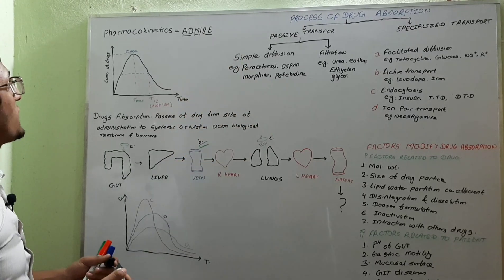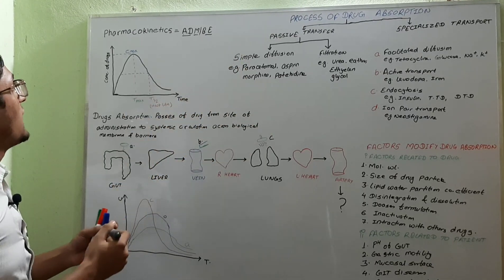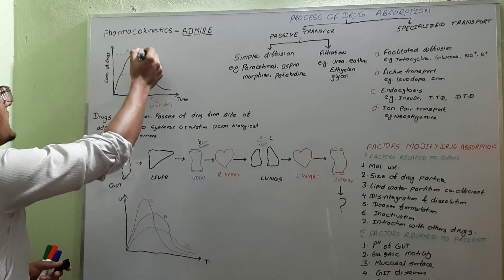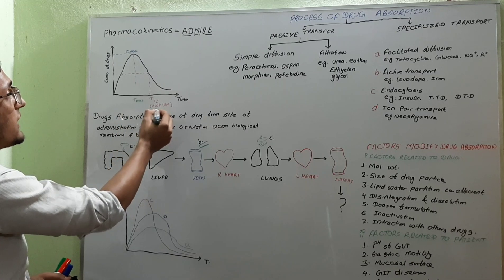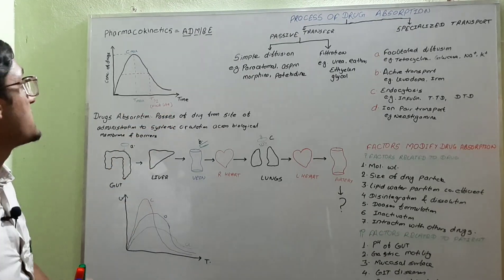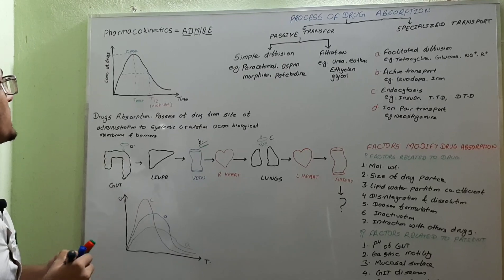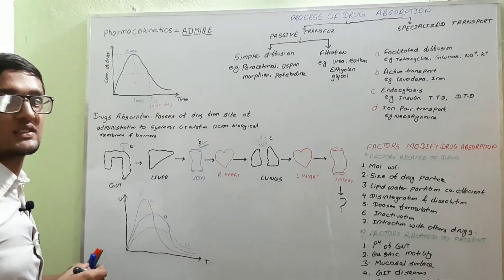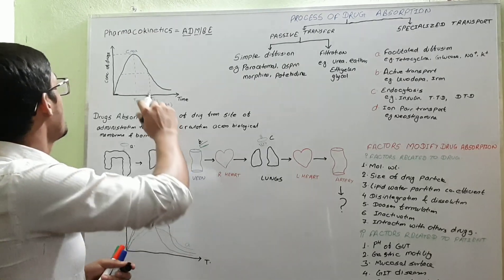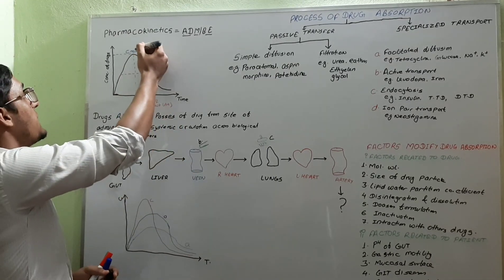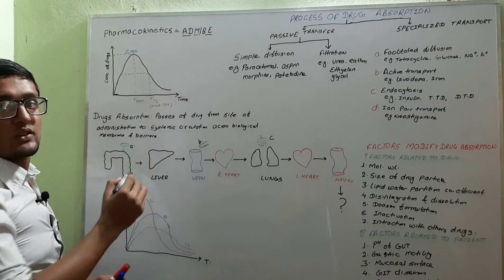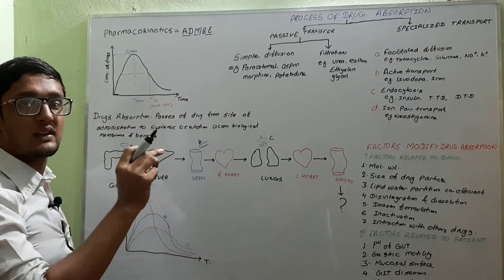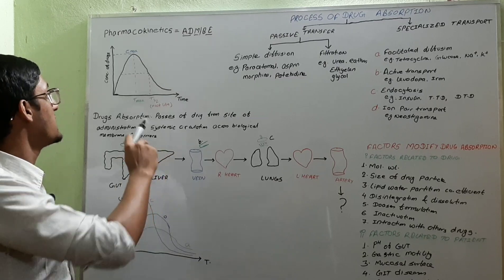Now, before starting absorption, I am going to briefly discuss concentration C max, T max, and half-life. Concentration maximum — when we give a drug to a person, after a certain time the concentration of the drug becomes maximum in the plasma; that is known as C max. The time required to reach maximum concentration is known as T max.